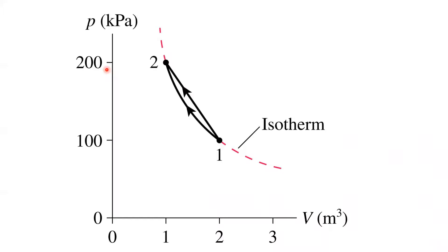This is what this problem is all about — this is the graphic from the chapter problem. A quantity of gas, 80 moles, is taken from position one on the PV diagram up to state two along a straight line path. This straight line path is not one of the three special cases: it's not an isotherm because an isotherm is a hyperbola, not a straight line; it's not an isochoric process (same volume would be a vertical line); and it's not an isobaric process (constant pressure). None of those state variables necessarily remain constant along this straight line trajectory.